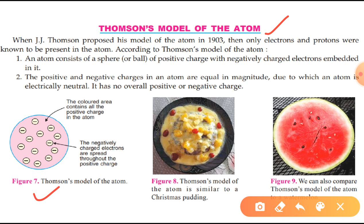The colored area contains all the positive charge in the atom, and the negative charge electrons are spread throughout the positive charge.